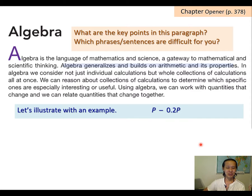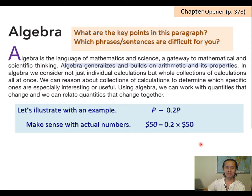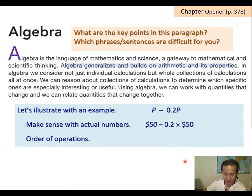So let's consider this P minus 0.2P. It involves a variable, it's an expression. Let's try to make sense of this expression with some actual numbers. So like $50 is P minus 0.2 times $50. In order to make sense of it, we need to know the order of operations.